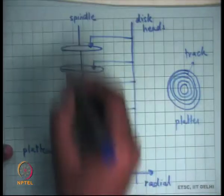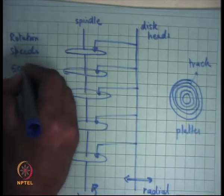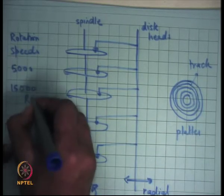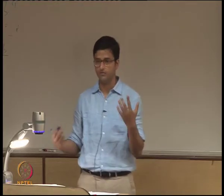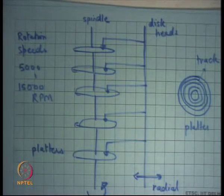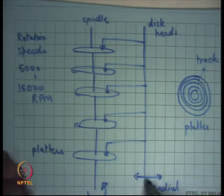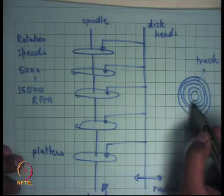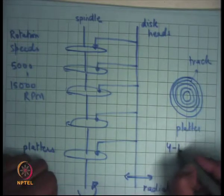Typical rotation speeds of a disk are 5,000 to 15,000 RPM — revolutions per minute. A laptop or mobile hard disk will be slower at around 5,000 RPM; an enterprise-grade drive will be faster. Similarly, typical seek times — the time for the radial movement to reach the correct track — range between 4 to 15 milliseconds on average.